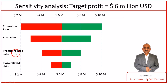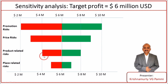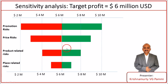Similarly, product related risks. If we handle these product related risks well, we can achieve a target profit of 8 million US dollars. Whereas if we don't handle it effectively, we end up making 4 million US dollars. While studying the product related risks, we are keeping all other risks at their base level and focusing only on product related risks.